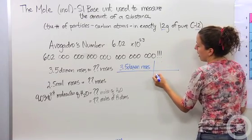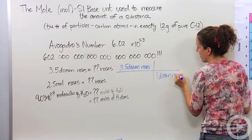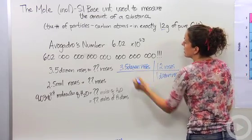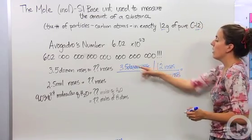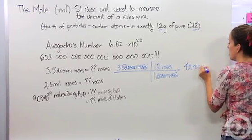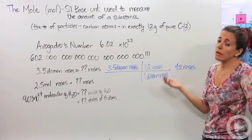So we know we have, in one dozen roses, we have 12 roses. So these units can cross out, because one's on top and one's on bottom. We're left with roses. Great. 3.5 times 12 is 42 roses. So we know that 3.5 dozen roses is 42 roses. Okay. Fair enough.